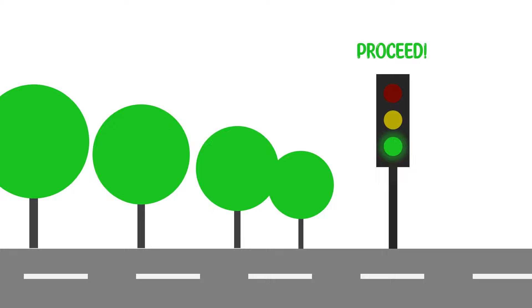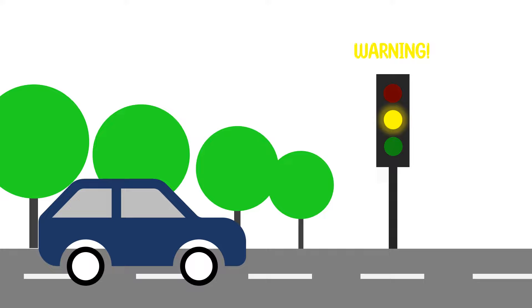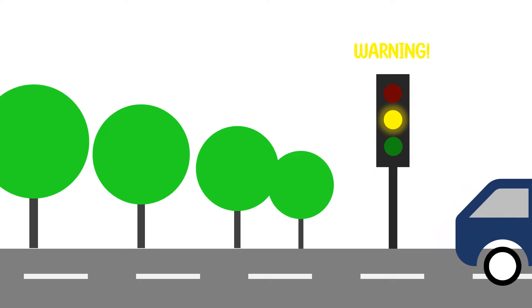Last, the yellow light. A blinking yellow indicator is a warning signal that the light will be changing from green to red, and traffic must reduce speed.